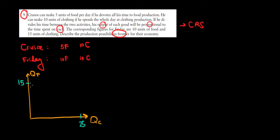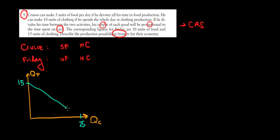Now how to connect these intercepts? We must connect them with a straight line, because we're speaking about constant returns to scale. If you don't know why constant returns to scale implies a straight line PPF, have a look at my video in the microeconomics playlist where I explain the relationship between returns to scale and the slope of the production possibilities frontier. So the PPF will be a straight line connecting those two points.